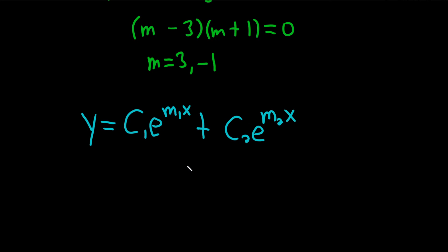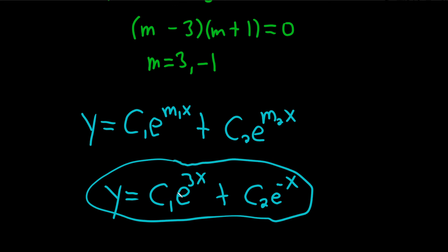So all you do now is you plug in the numbers. So y equals c1 e to the 3x plus c2 e to the negative x. It doesn't matter which one you put first. You could have put the negative here in the m1. It doesn't really matter. That's it. I hope this video has been helpful. Thank you.